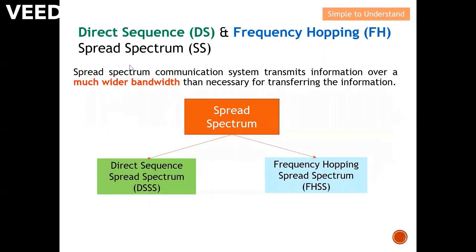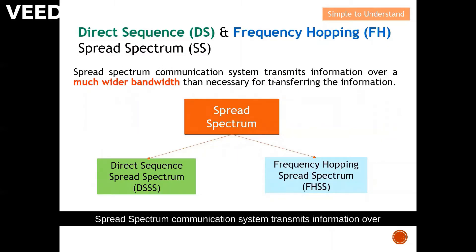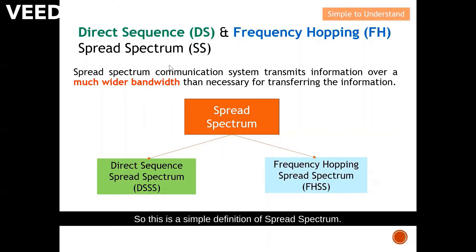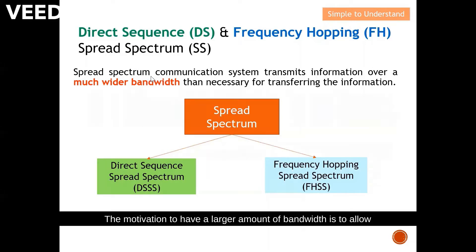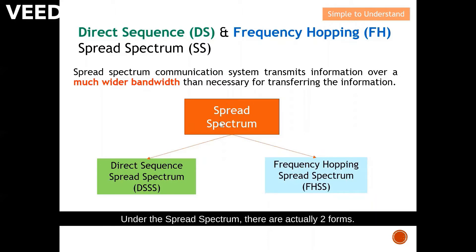Spread spectrum communication systems transmit information over a much wider bandwidth than necessary for transmitting the information — this is a simple definition of spread spectrum. In short, spread spectrum requires a larger bandwidth to carry the same amount of data. The motivation to have a larger bandwidth is to allow multiple users to share the same resource, which is the spectrum.